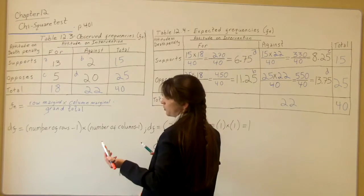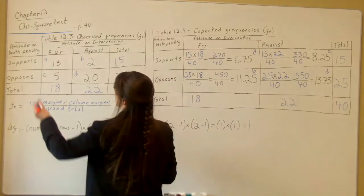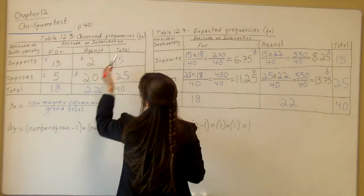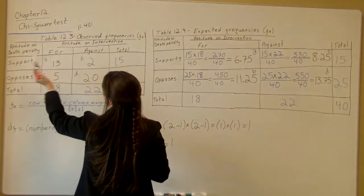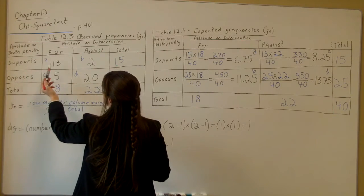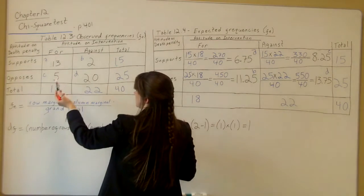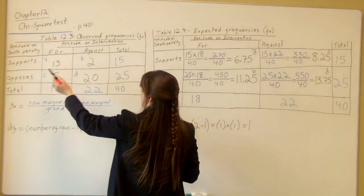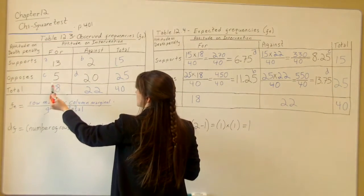Now that you're at Table 12.3, let's look at it. We have observed frequencies, attitude on intervention for and against, and attitude on death penalty supports and opposes. Notice I put a little A, B, C, D on this. This is similar to the previous chapter where you had the little blocks labeled A, B, C, D. They're labeled the same way.